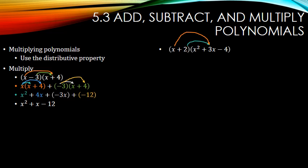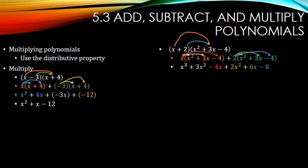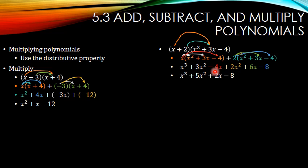Here's another one. Again, I'm going to take the x times everything, and then the 2 times everything. Now distribute those. So I have x times x-squared, x times x, x times negative 4, then 2 times x-squared, 2 times 3x, and 2 times negative 4. Combine like terms. We have x-cubed, and then 3x-squared and 2x-squared make 5x-squared. And we have negative 4x and 6x which makes 2x. And then negative 8.